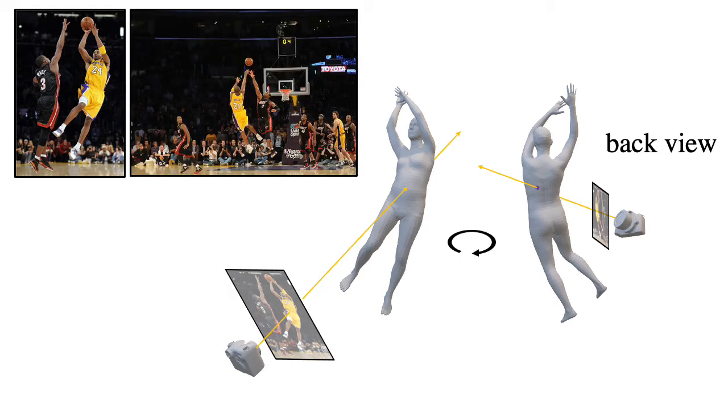Finally, we search over other images and see if either of these points are visible. In this case, the back of Kobe is visible.